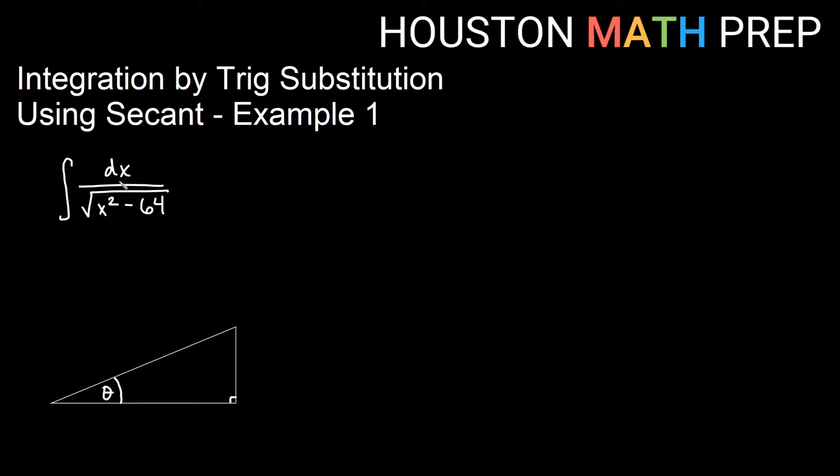Here we have the integral of dx over the square root of x squared minus 64. If we had an x term out here or something slightly different, it might just be a definition, but in this case it's not really a definition that we can just use.